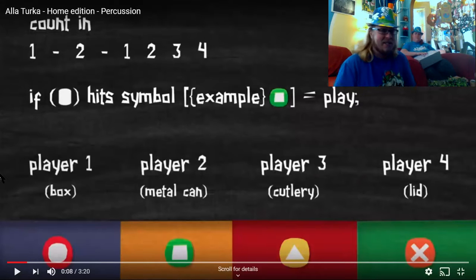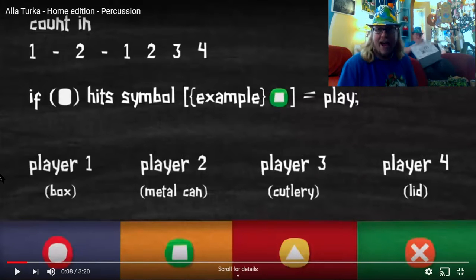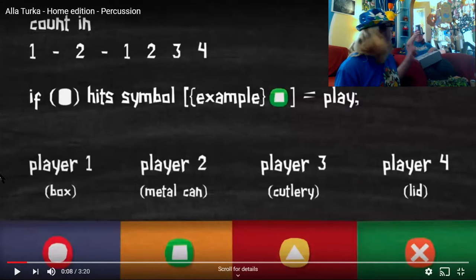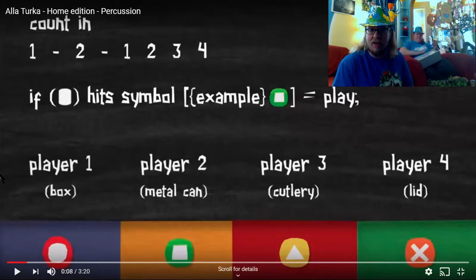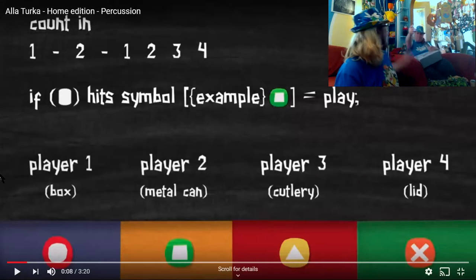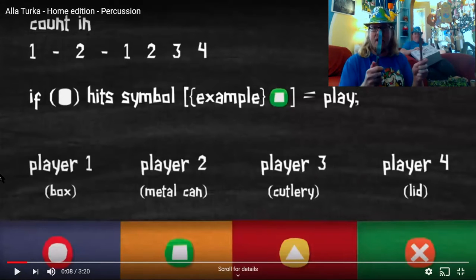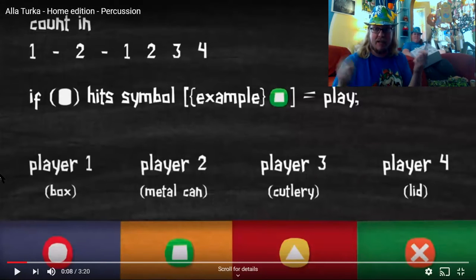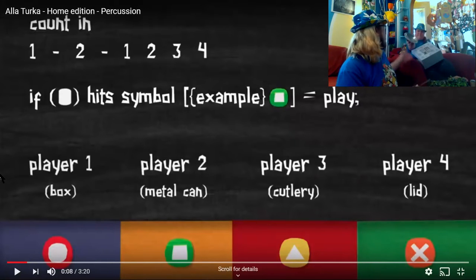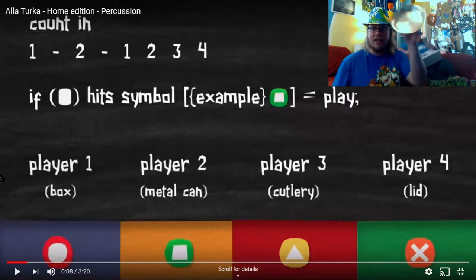So, you need a box. We have a box. We got a box. We have a metal can. Cool. I had soup for lunch today. So, we have a metal can. Cutlery. What's cutlery? Ah, forks, spoons, butter knives. You probably don't want to use steak knives. You might accidentally kill your brother. And lid. We have a lid. Yes, we have a lid.